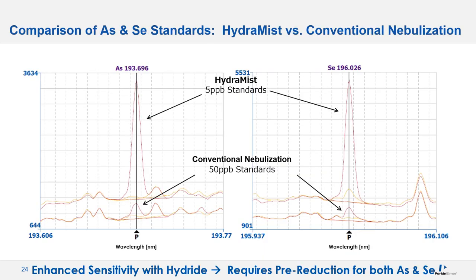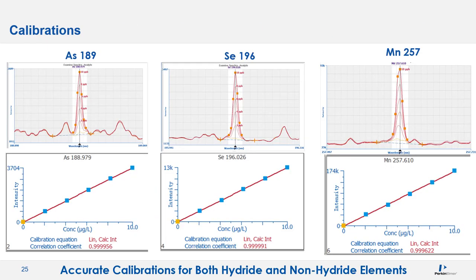Looking at initial Hydromist results: conventional nebulization of 50 ppb standards showed relatively low signals, but with the Hydromist at 5 ppb we saw much higher sensitivity, demonstrating the enhancement from hydride introduction. Calibration curves for arsenic and selenium by hydride and manganese by conventional nebulization were run at 2, 4, 6, 8, and 10 ppb — the 2 ppb standard was clearly visible for both arsenic and selenium, as well as manganese. Curves were very linear, showing enhanced sensitivity for hydride elements while simultaneously achieving good sensitivity for conventional analytes.